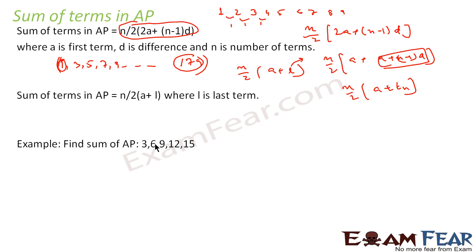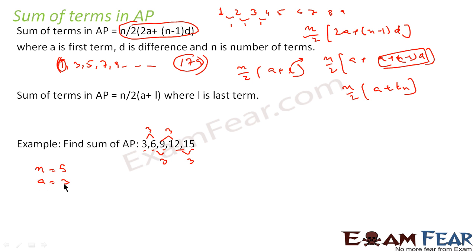Let's take one example. We have to find the sum of the terms where the AP is 3, 6, 9, 12, 15. First, let's confirm whether it is an AP: 6−3 = 3, 9−6 = 3, 12−9 = 3, 15−12 = 3. The common difference is constant, so it is confirmed as an AP. The number of terms N = 5, the first term A = 3, and the common difference D = 3.